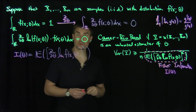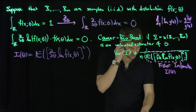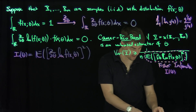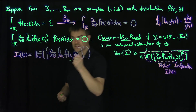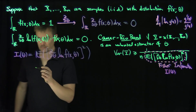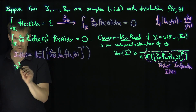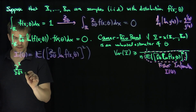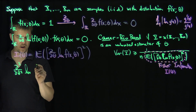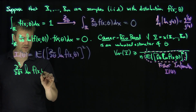Now I want to find an alternate formulation of this Fisher information, because sometimes this is easy to compute and sometimes it's not so easy. So I can note that if I took two theta derivatives of the log of f of x and theta, what would we get?